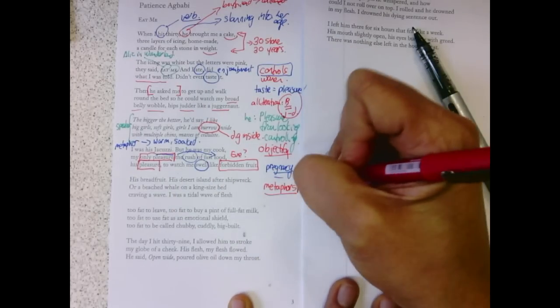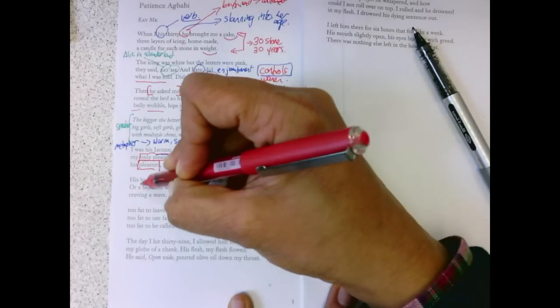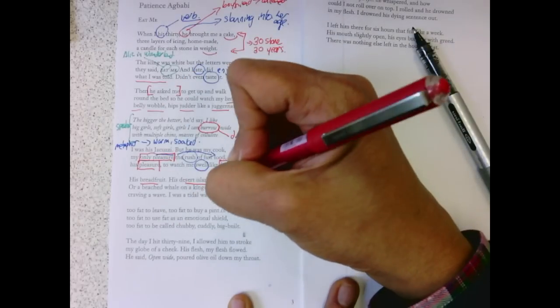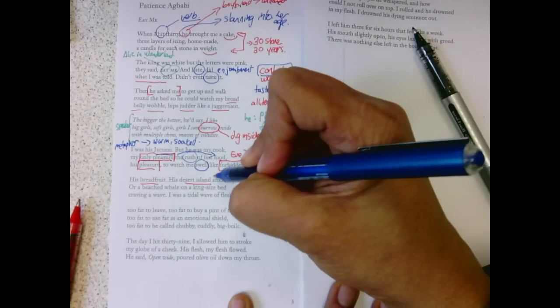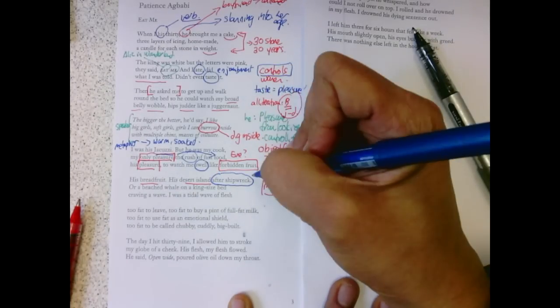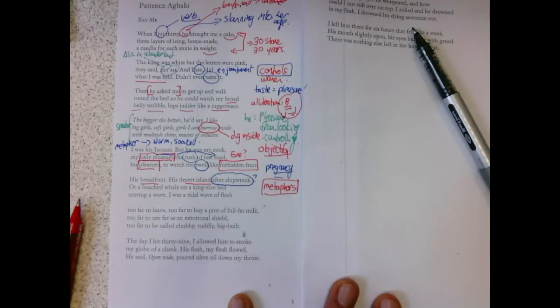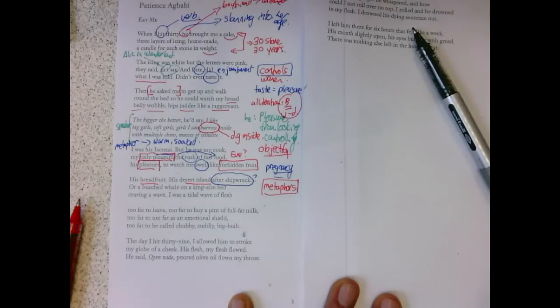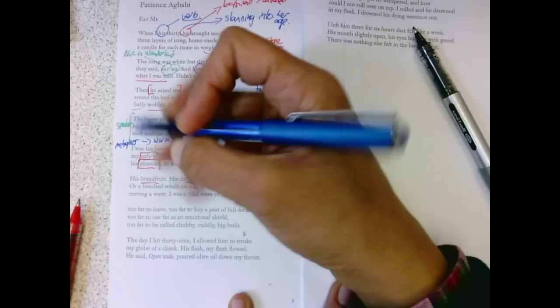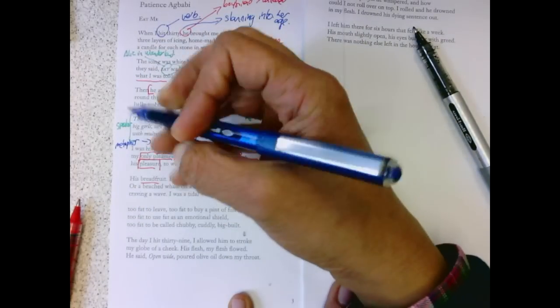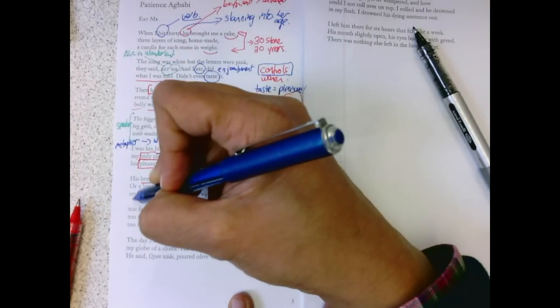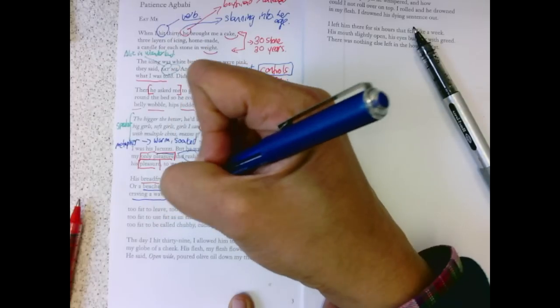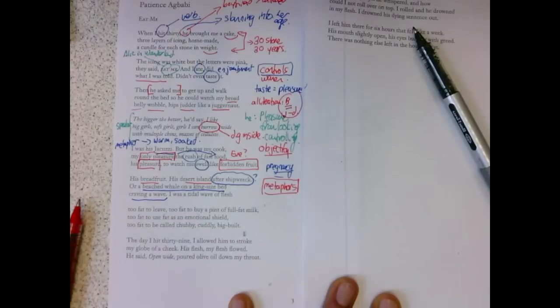I wasn't like this. I was this. I was his breadfruit. I was his desert island. It begs the question of after shipwreck, what problems have they had? This emphasizes the image of her as being a kind of isolated, round, stationary object. But what's the problem? Or quickly changing, a beached whale on a king-sized bed craving a wave.